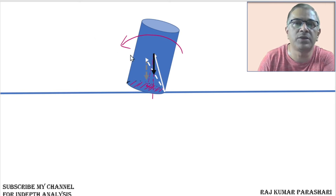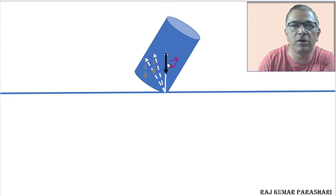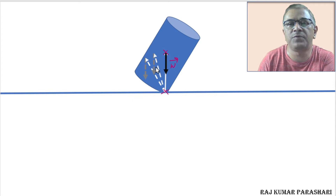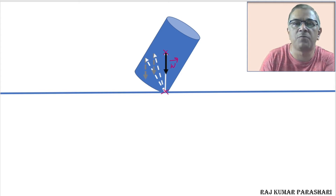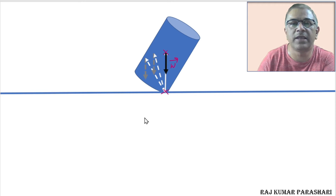Now you tilt this cylinder a bit further. You'll reach a situation in which the vector representing the weight of the cylinder is along the line joining the edge of the cylinder to the center of the cylinder. If you release this cylinder very carefully in this configuration, the cylinder will stay forever in the absence of external forces. This is a very critical situation — the cylinder is on the verge of toppling.